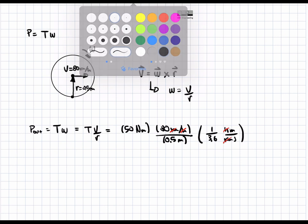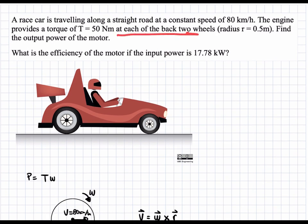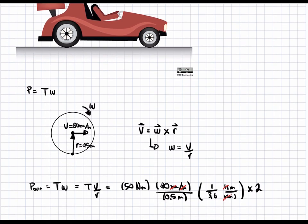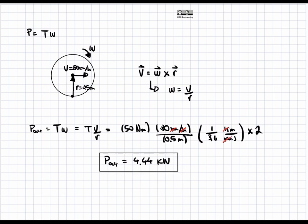The last step is to multiply by 2, because the problem states there are two back wheels, so we multiply everything by 2 to get the total power output. Plugging these values into the calculator, we get P_out equals 4.44 kilowatts. This is the final answer for the first part of the question: the output power of the system.